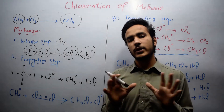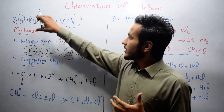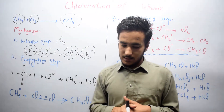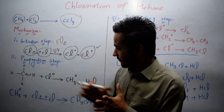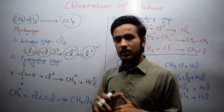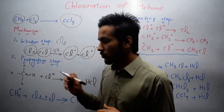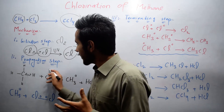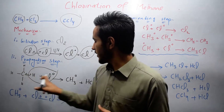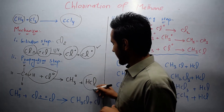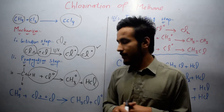So that was the initiation step, in which we get two chlorine radicals. The second step is the propagation step. In the reaction, CH4 gas is present, and the chlorine radical is also present. This chlorine radical will attack CH4. The chlorine radical abstracts a hydrogen from methane, forming a CH3 methyl radical plus HCl gas.